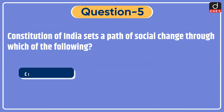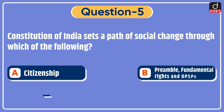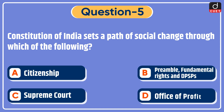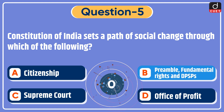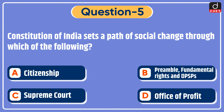Next question: the Constitution of India sets a path of social change through which of the following? Options: citizenship, preamble and fundamental rights and DPSPs, Supreme Court, or office of profit? The correct answer is option B — preamble, fundamental rights and DPSPs.